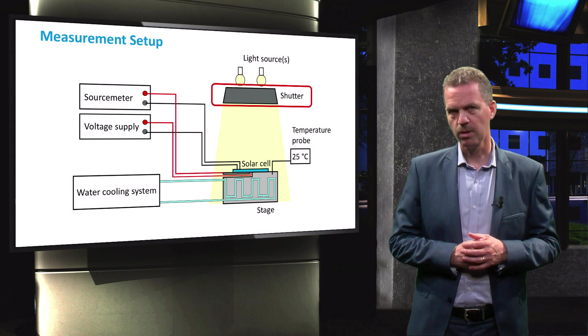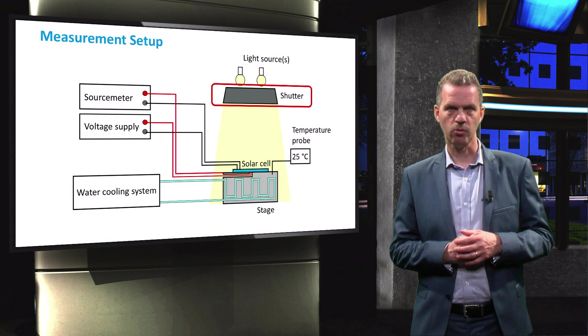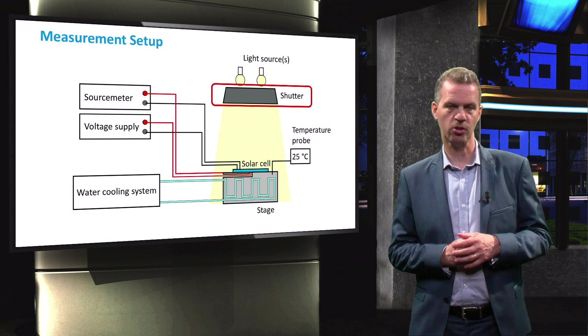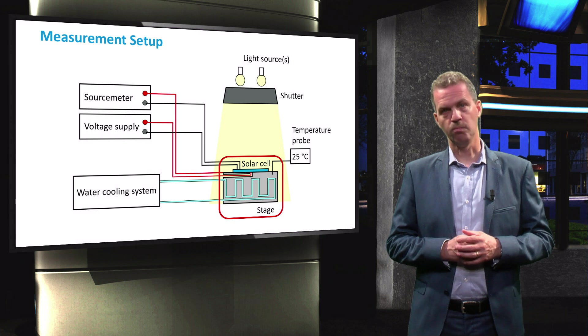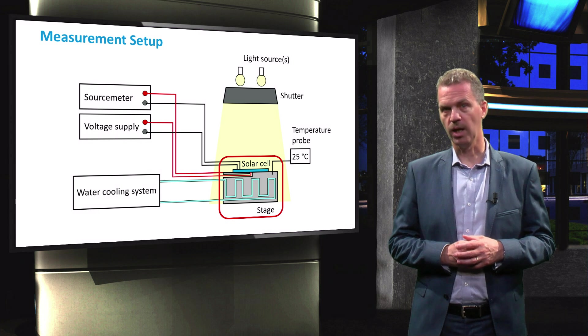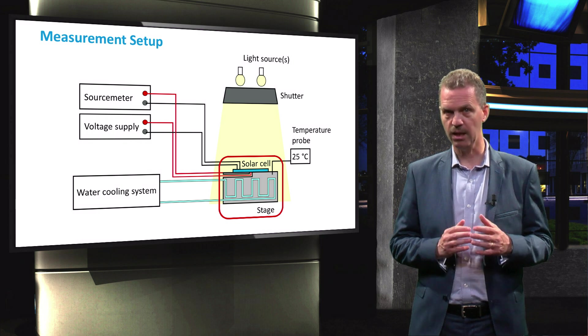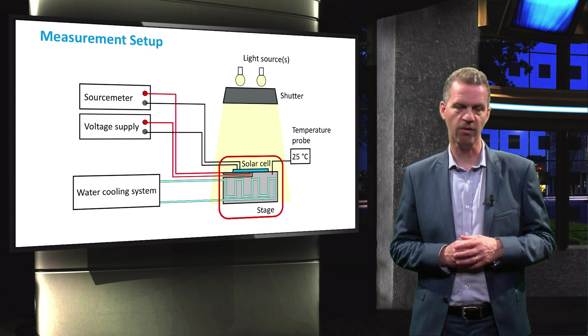The light of the solar simulator can be blocked by a shutter to stop the lamps from heating the solar cell prior to taking the measurement. The solar cell is placed on a stage attached to a liquid cooling system that keeps the stage at 25 degrees Celsius.